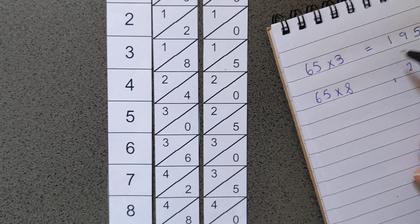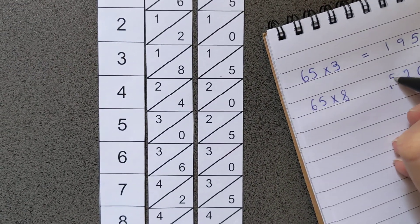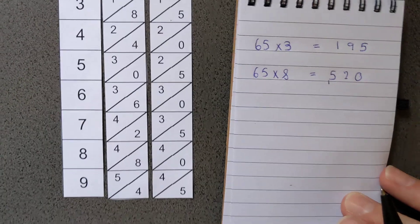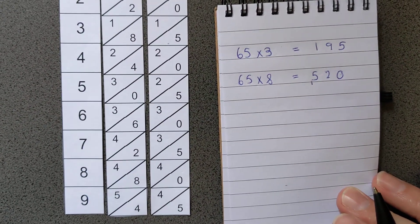And then we'd have the 4 from the final column, and then we add the 1 we've carried. So what we've got is 65 times 8 is 520.